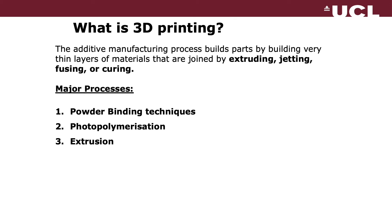3D printing can involve extruding, jetting, fusing, or curing. Three major processes have been developed. The first is the powder binding technique, where you have a powder — which could be metal or plastic — that is fused using, for example, a laser or heat, and the particles are fused together layer by layer.